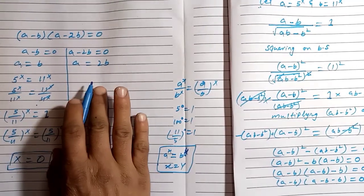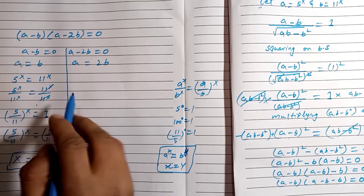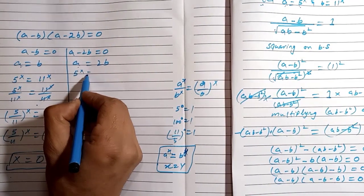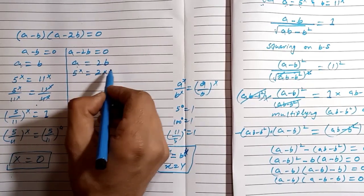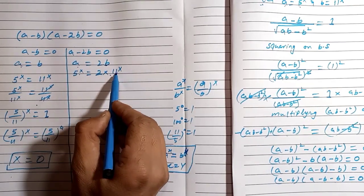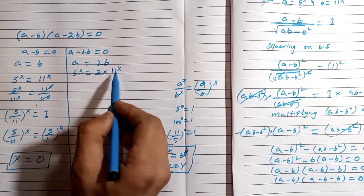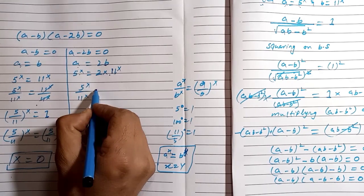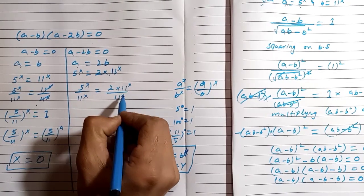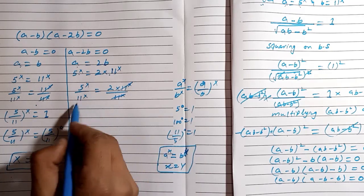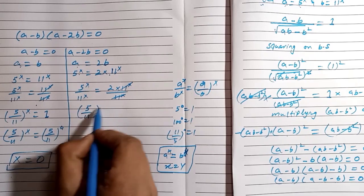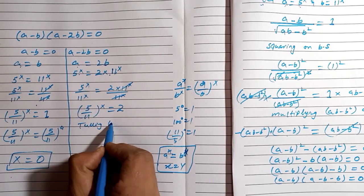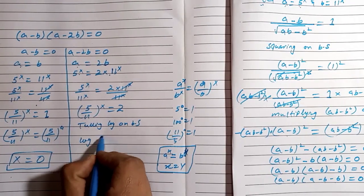Now using a = 2b, we substitute a = 5^x and b = 11^x, giving 5^x = 2 · 11^x. Dividing both sides by 11^x: 5^x divided by 11^x equals 2 · 11^x divided by 11^x. The 11^x terms cancel, leaving (5/11)^x equals 2. Our aim is to find x, so we take log on both sides: log of (5/11)^x equals log 2.